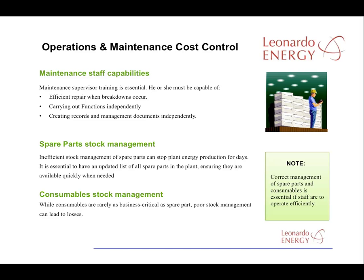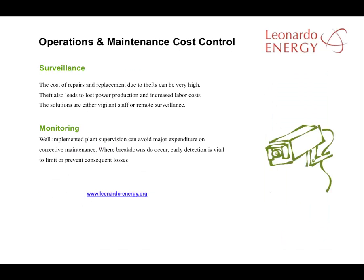Stock management is another important area affecting maintenance. Poor management of spare parts can lead to a complete stop of a plant for days. So it is essential to have an updated list of all the spare parts available for the plant and ensure the stock matches the potential need. Effective surveillance can perform a key role in maintenance performance, and a well-implemented monitoring system can have a great influence on preventive maintenance, as it can help detect problems before serious breakdown.